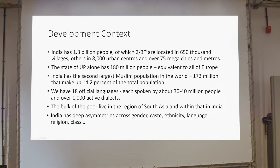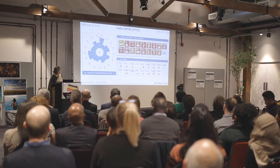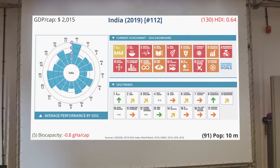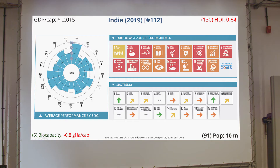India has deep asymmetries across gender, caste, ethnicity, language, and religion. These are two slides I'm going to show just to give you a context, which IHS has put together because they work in the area of climate action and sustainable cities. If you look at this, they've taken regional indicators — not the global indicators — of sustainable development goals, and you can see India is doing poorly in most of them. The dashboard shows red, which actually means significant major challenges. The orange shows significant challenges, and there's one single amber which shows challenges remain.